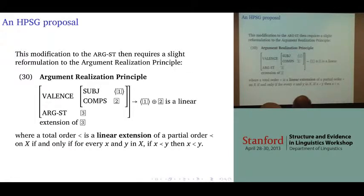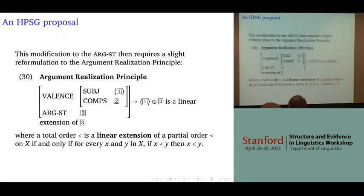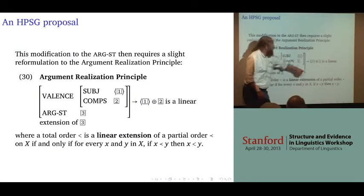These things do have to occur in some order. We have to get from the argument structure to the valence. In the standard formulation, we say that the subject is whatever the first — the highest-ranking — argument is, and the complements are the remaining ones, through a sort of append operation.